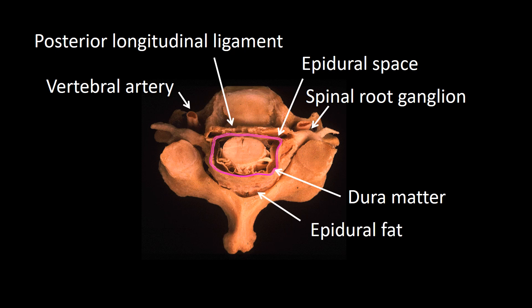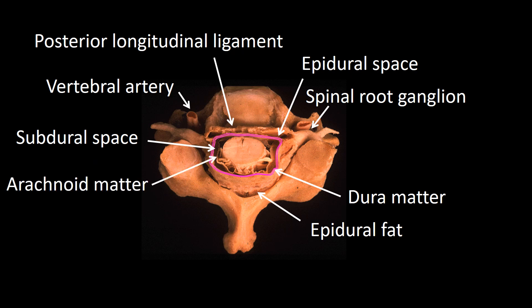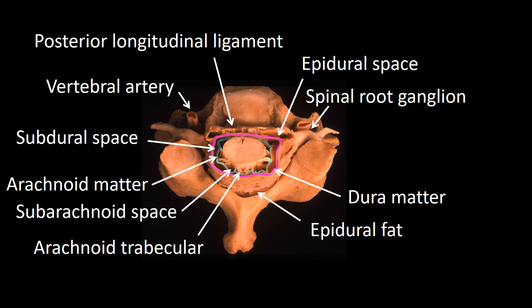In the epidural space we find epidural fat and vessels. Under the dura we find the subdural space, which in life is a virtual space. Now I am pointing to the arachnoid, which I have traced in aqua. Inside we find the subarachnoid space, which is occupied by cerebrospinal fluid with its arachnoid trabeculations. We can also see the denticulate ligament — bilateral thickenings of the collagen component of the pia mater that attach to the dura, thus suspending the spinal cord.